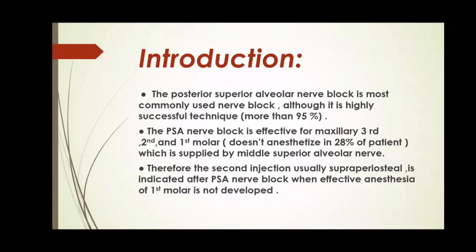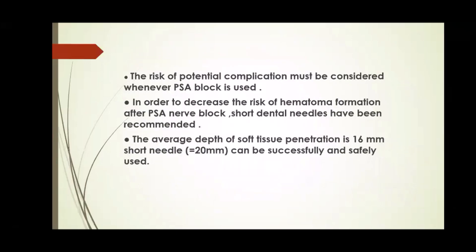Introduction. The posterior superior alveolar nerve block is the most commonly used nerve block. Although it is a highly successful technique — more than 95% — the PSA nerve block is effective for the maxillary third, second, and first molar. It does not anesthetize in 28% of patients, which is the area supplied by the middle superior alveolar nerve. Therefore, a second injection, usually supraperiosteal, is indicated after PSA nerve block when effective anesthesia of the first molar is not achieved.